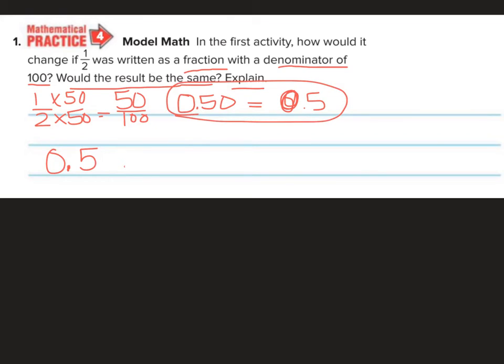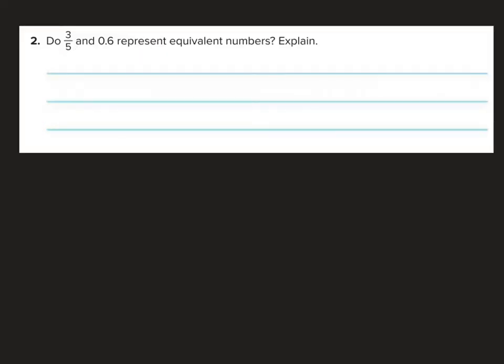So it's kind of neat how I could say, oh, I want to make it 100, or I could say, oh, I want to make it 10. We can kind of pick and choose, because we're going to get the same answer, just with maybe some extra 0's that we don't need. So let's try another one. Do 3 fifths and 6 tenths represent equivalent numbers? Explain. So let's take 3 fifths.